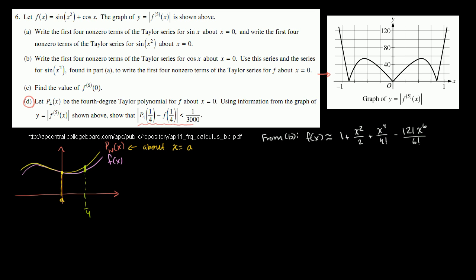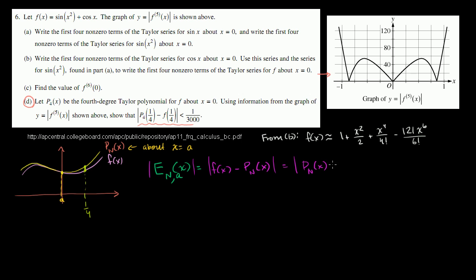Let me define the error function, sometimes called a remainder. The error function for the nth degree Taylor polynomial approximation about a is a function of x — for any x you pick, what will this error be? It equals the difference between the two things: f of x minus the polynomial approximation of x. And if you take the absolute value, that equals the absolute value of the polynomial approximation at x minus f of x.